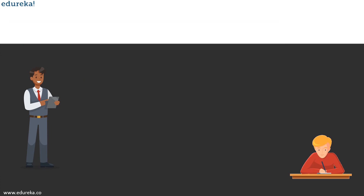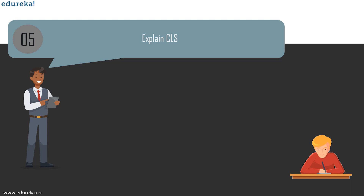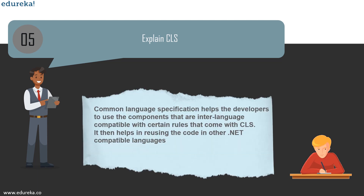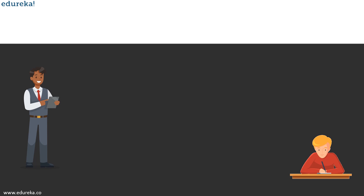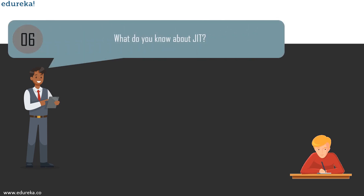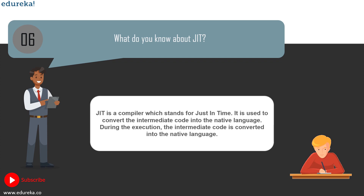Question 5: explain CLS. CLS stands for Common Language Specification and it is a subset of CTS (Common Type System). It defines a set of rules and restrictions that every language must follow when running under the .NET framework. Languages that follow these rules are said to be CLS compliant. Question 6: what do you know about JIT? JIT stands for just-in-time compiler and is used to convert intermediate code into native language during execution.